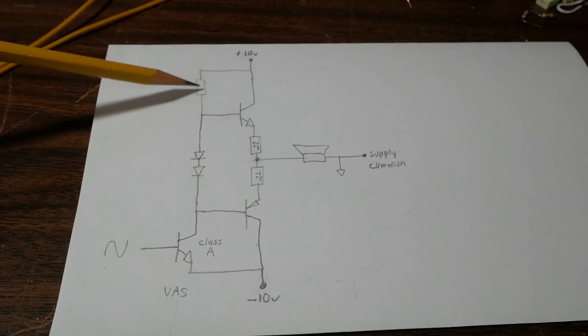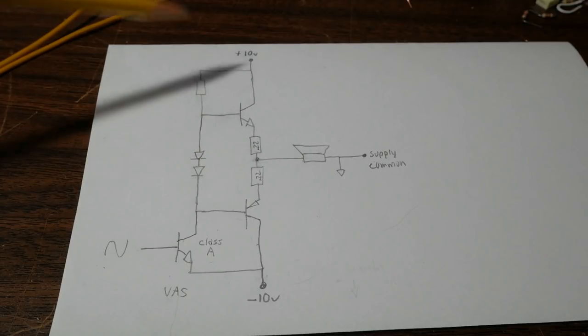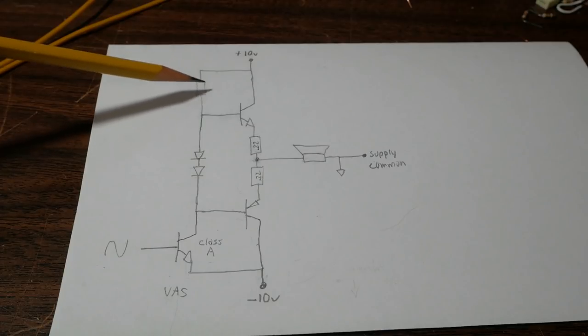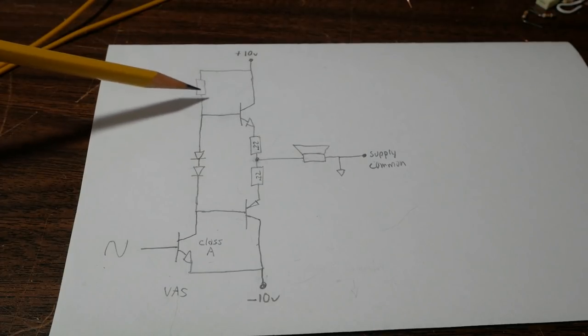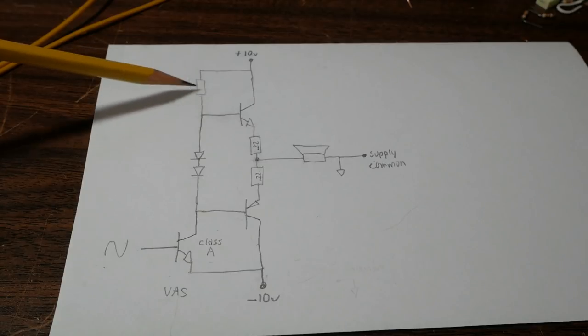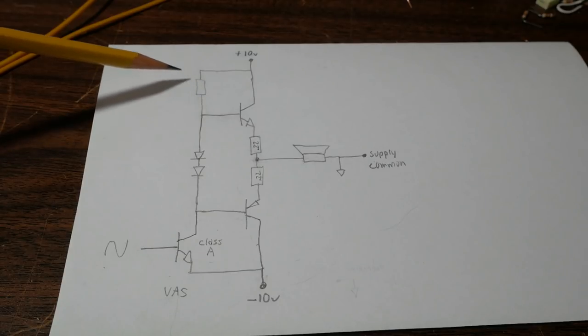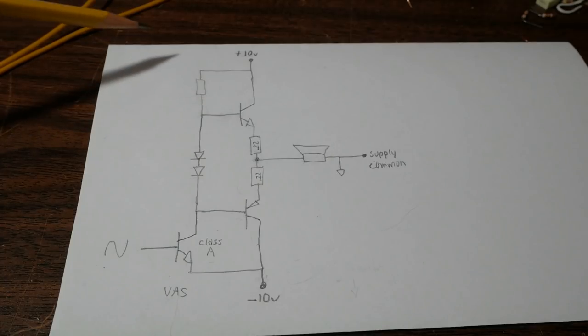Well, we need to take out this resistor here and replace it with a constant current source. That could be an active current source like I used in my other videos.